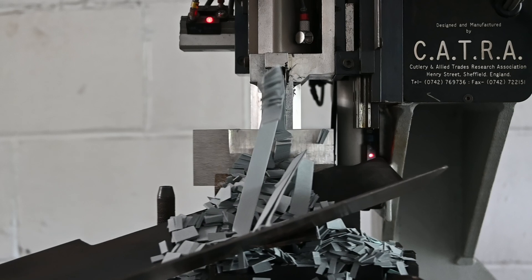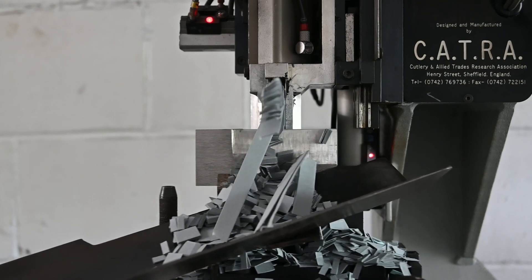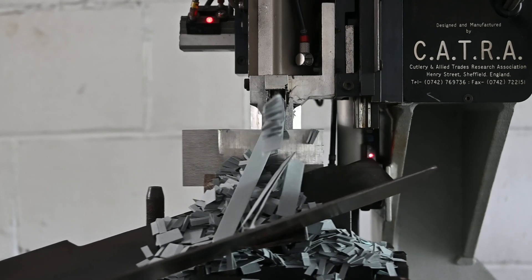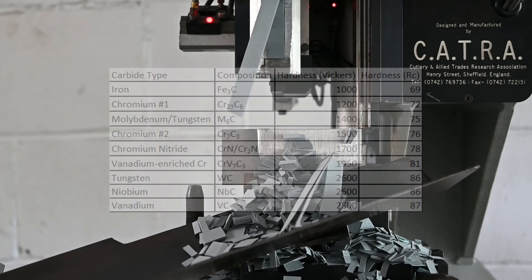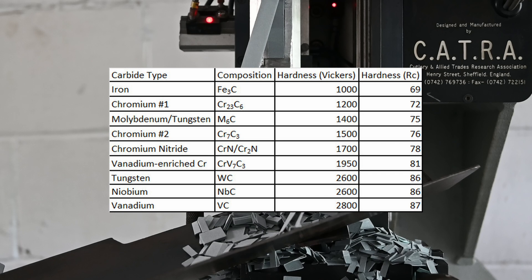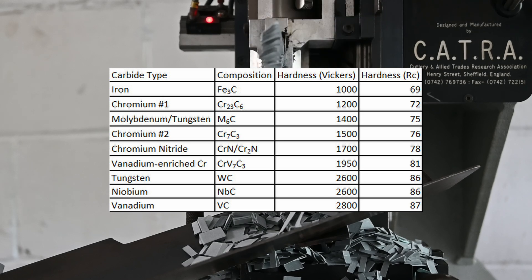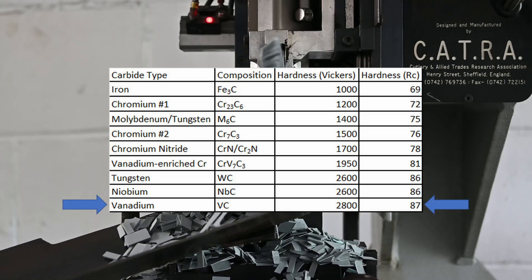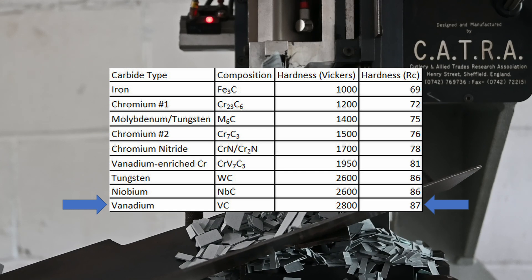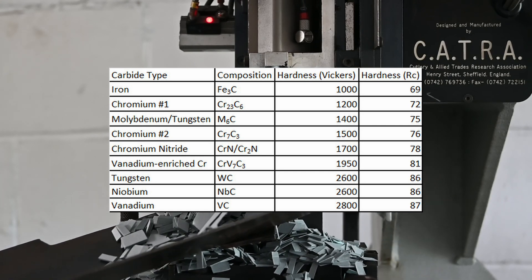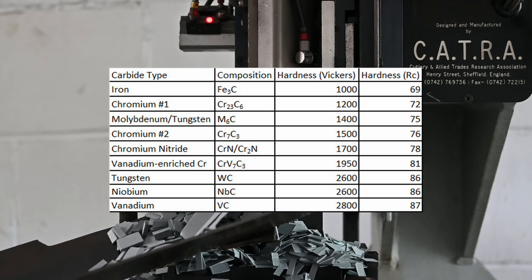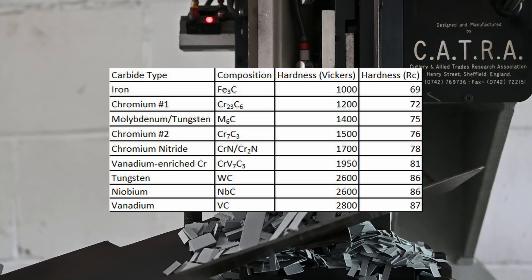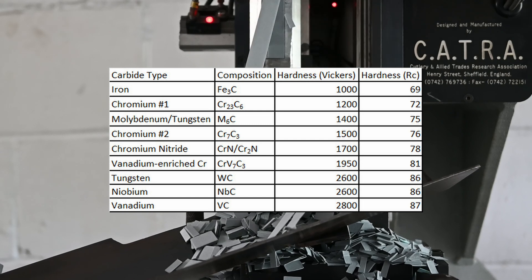So the only conclusion I can come to is that vanadium carbonitrides are significantly softer than vanadium carbides, and this is dramatically reducing the resistance to edge wear. The very high wear resistance of vanadium steels come from the very high hardness of the vanadium carbides, one of the hardest carbides that are found in steel. So if adding a bunch of nitrogen into those carbides drops the hardness, the abrasive wear resistance also goes down significantly. This limits the maximum wear resistance that nitrogen alloyed steels can have unless there is another element that could be used instead of vanadium.